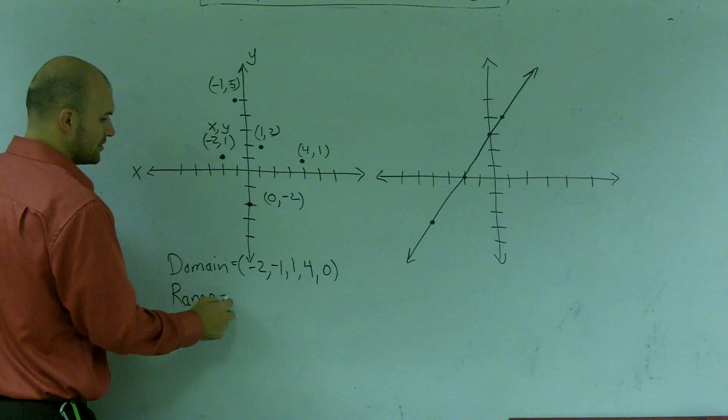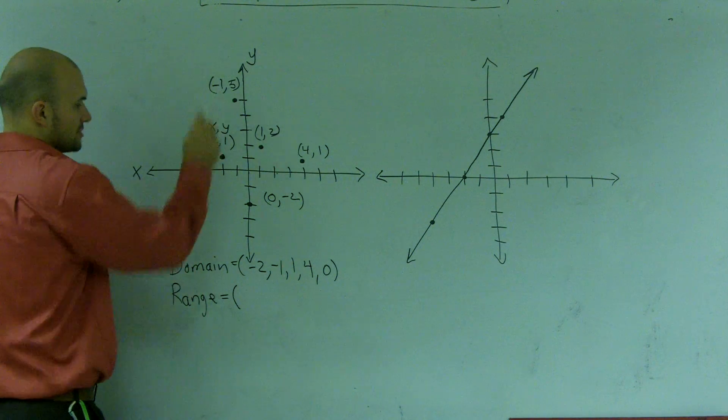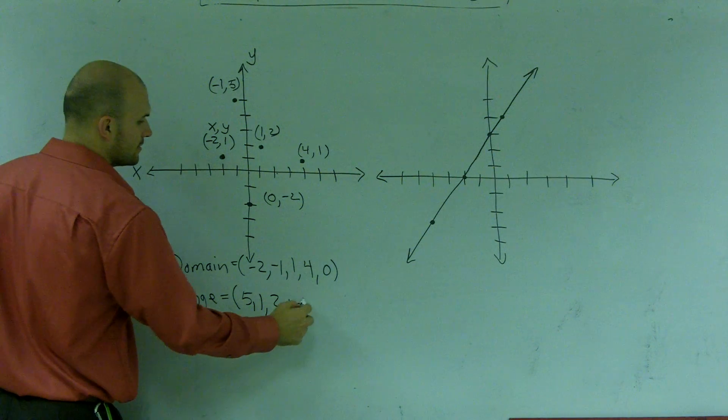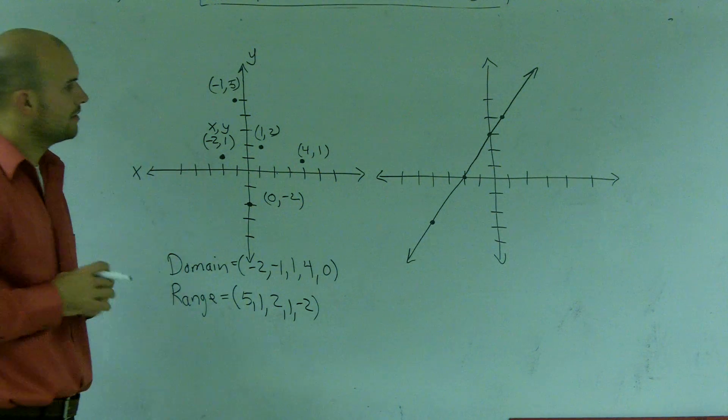And over here, my range is going to be all the set of y values. So it's going to be five, one, two, one, and negative two.